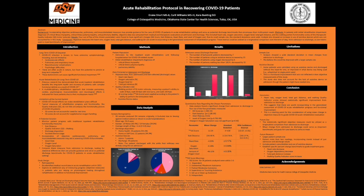These statistically significant changes suggest that objective measures are worth incorporating in the generalized assessment of COVID-19 acute rehab progress and functional improvement. This data can be used as a starting point to consider using mean change of these objective measures to guide rehabilitation decisions in patients recovering from COVID-19.